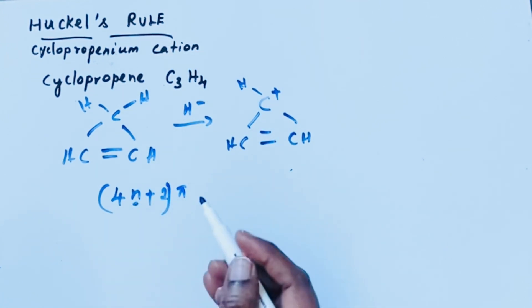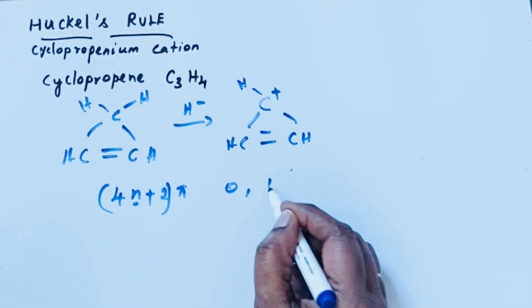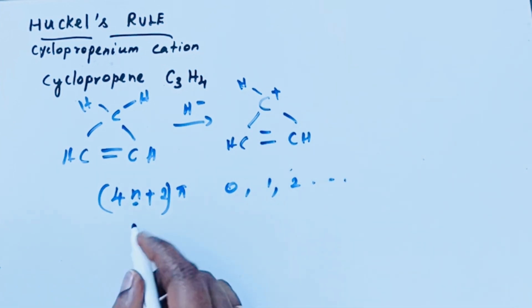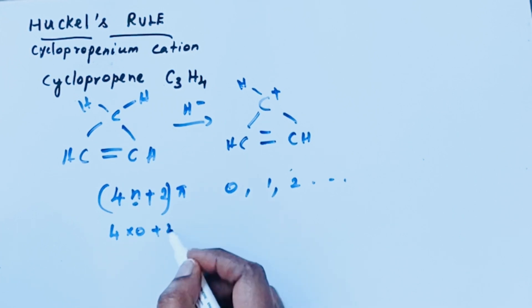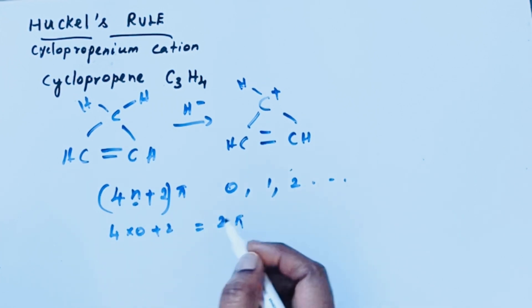Here n stands for integer. It may be 0, 1, 2 like that. So if n is equal to 0, then 4 into 0 plus 2, you will get 2 pi electrons. If n is equal to 1, 4 into 1 plus 2, 6 pi electrons.